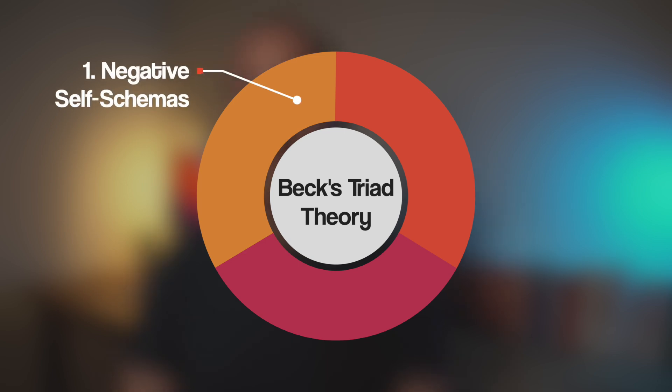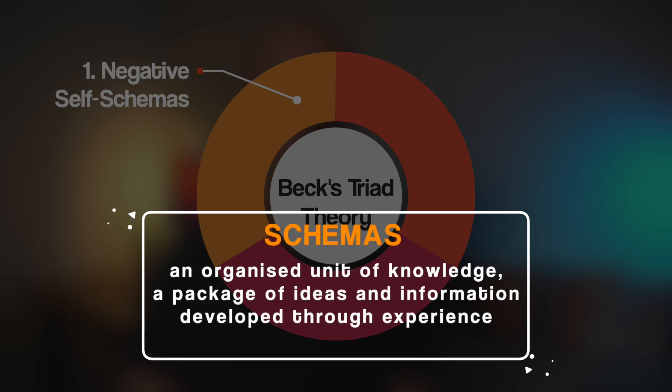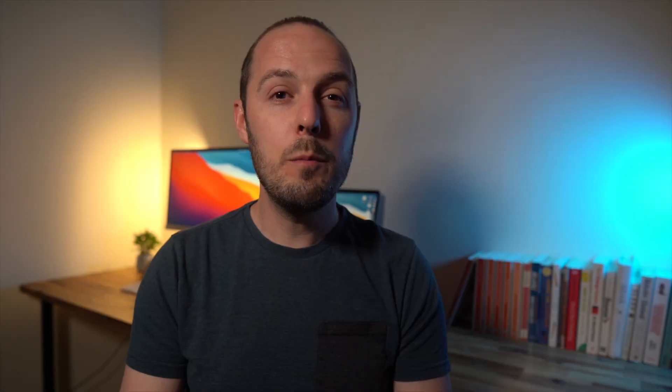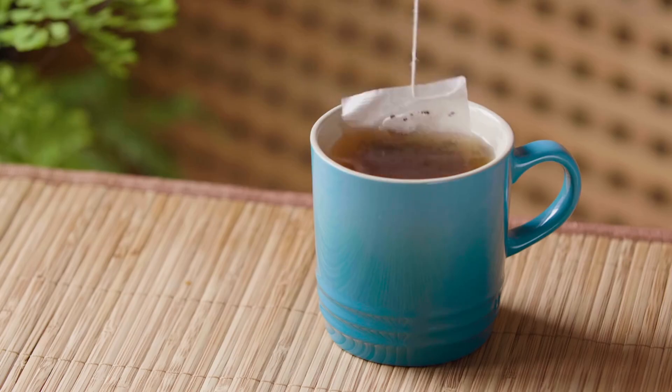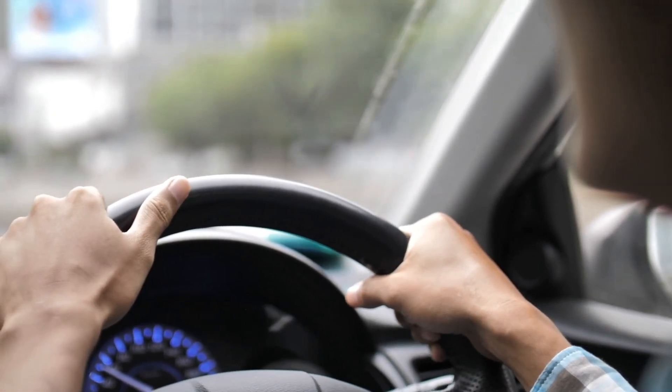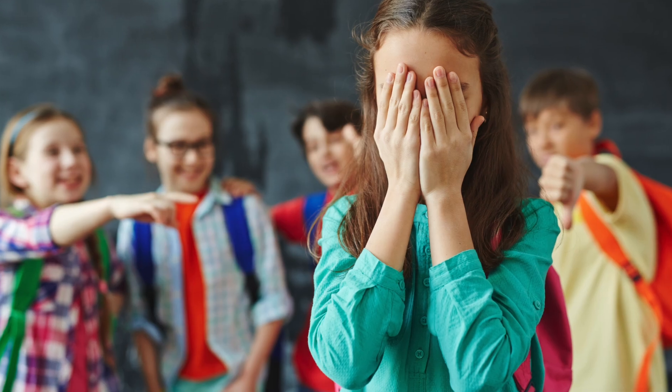The first part refers to what he called negative self-schemas. A schema is an organised unit of knowledge, a package of ideas and information developed through experience — some refer to it as a mental framework. We have schemas for all sorts of things, like how to make a cup of tea or how to drive a car. Negative self-schemas refer to how over time some people have developed patterns of thinking about themselves that are negative, possibly through criticism and rejection they've received from significant people in their life, including parents and peers.